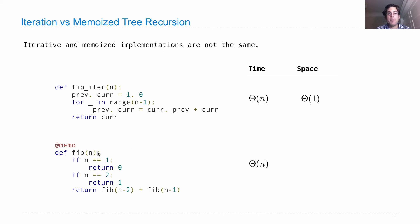What about memoized tree recursion? This is also theta n. How do we know that? Because we're actually just going to call fib n times. And the space that gets used up is theta n. How do we know that?